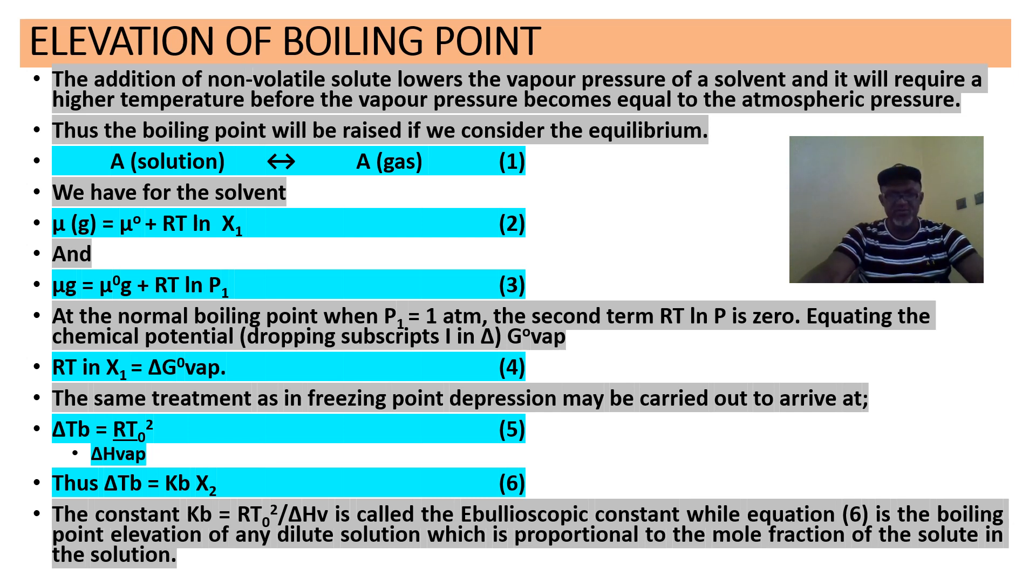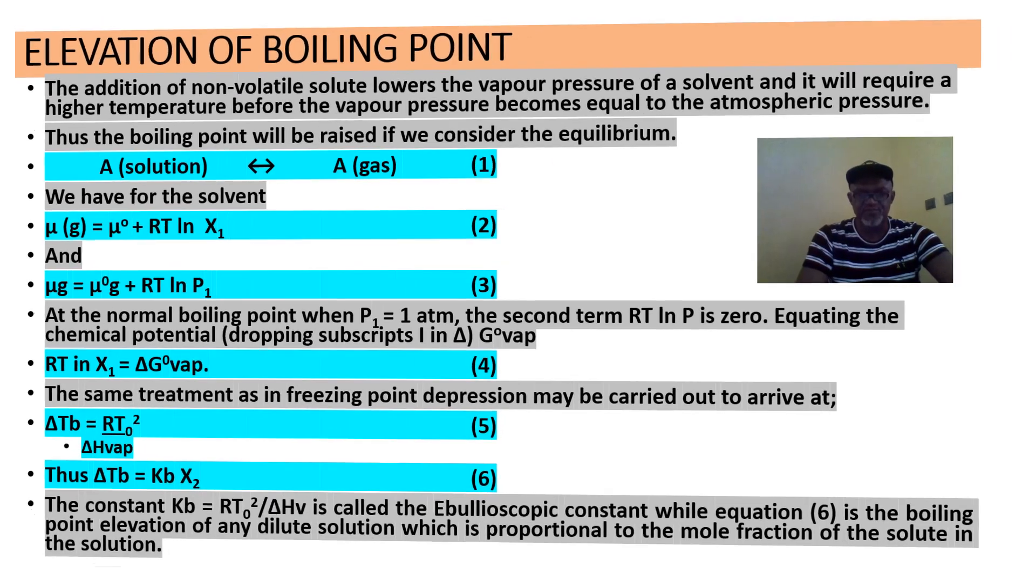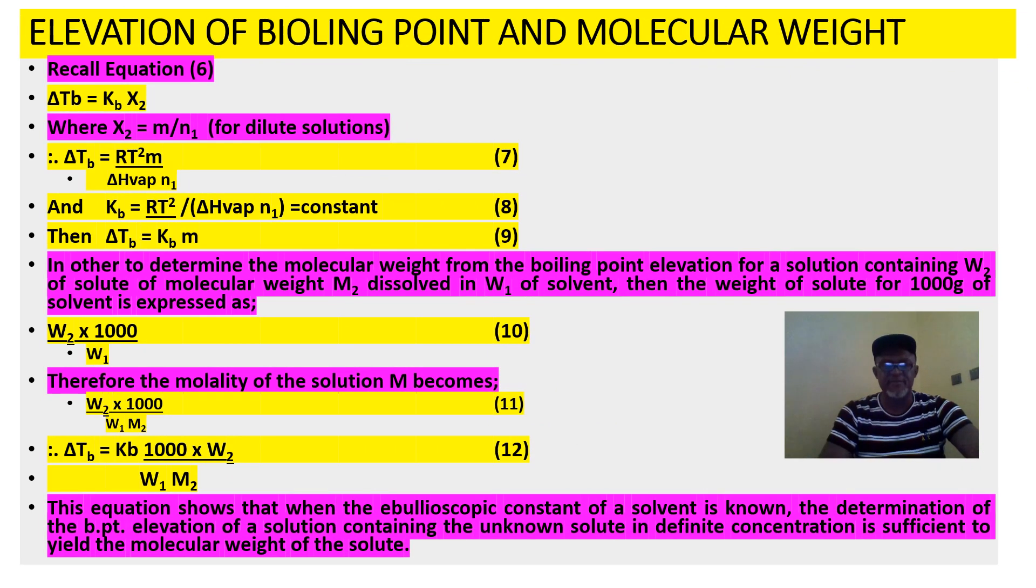Under dilute conditions, we substitute with our W1, W2, M2, M1, and we can use equation 6. Of course, a constant Kb, we call it an ebullioscopic constant, just like Kf in the depression of freezing point we call that cryoscopic constant. So elevation of boiling point and molecular weight, that's what I've just explained. If delta Tb is equal to Kb times x2, we'll now replace x2 by N2 over N1. So we arrive at equation 12, and we can use this equation 12 to calculate the molecular weight of the solute, or even to calculate the ebullioscopic constant, or to calculate the elevation of boiling point.